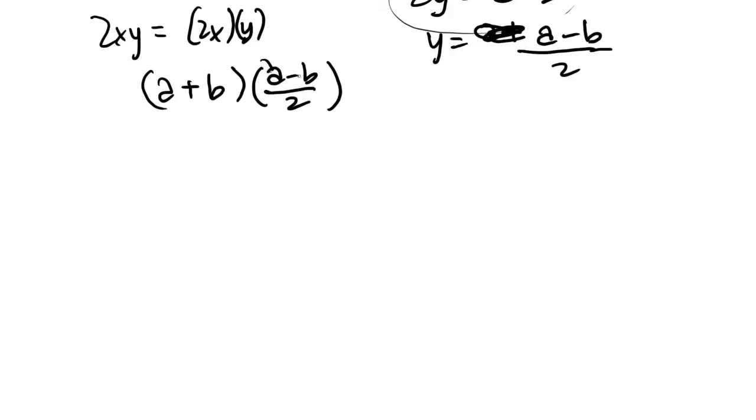a plus b times a minus b is a squared minus b squared. And on the bottom, as the denominator, we have 2. And that is a.